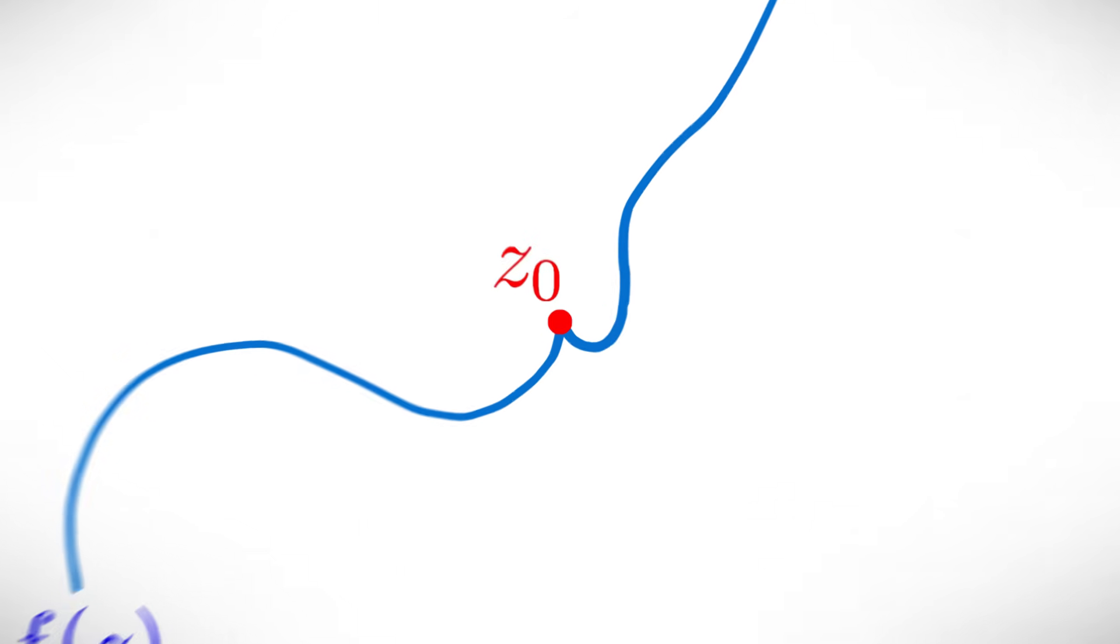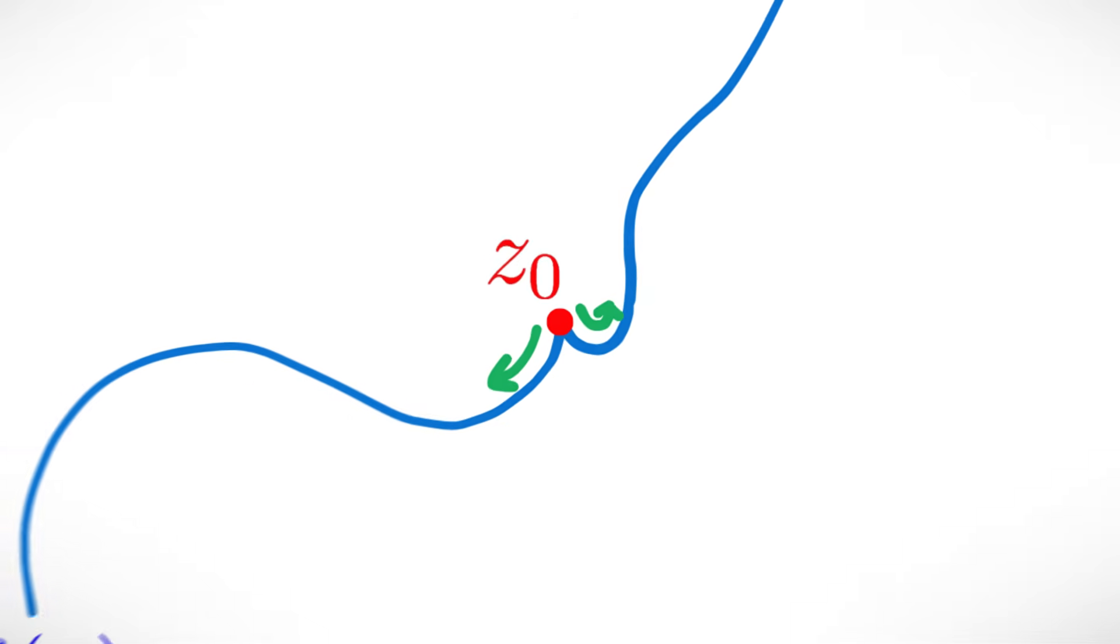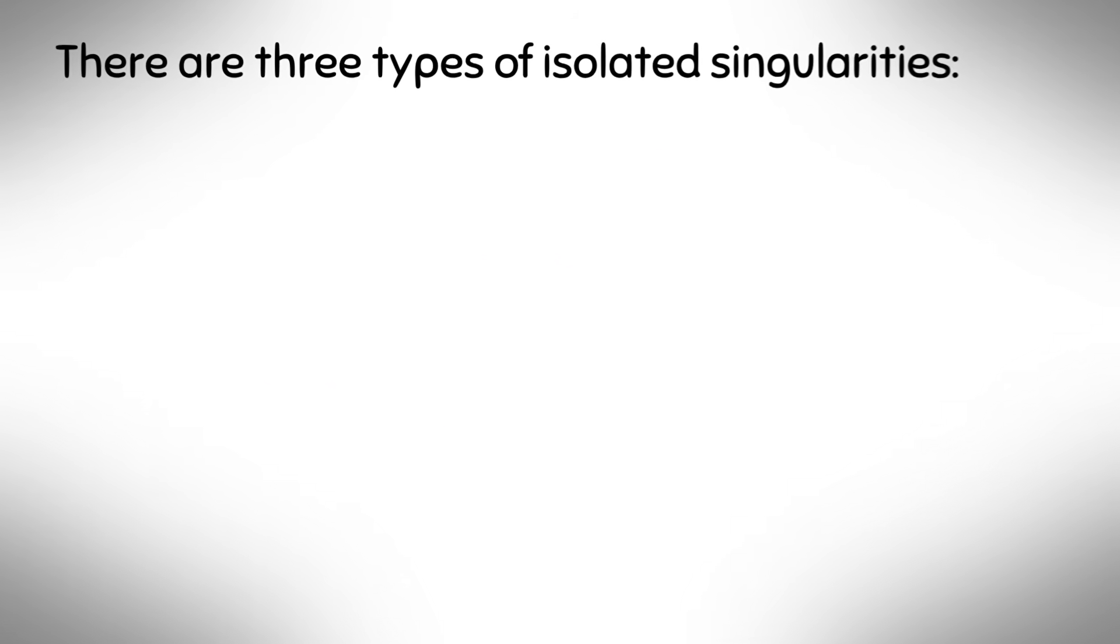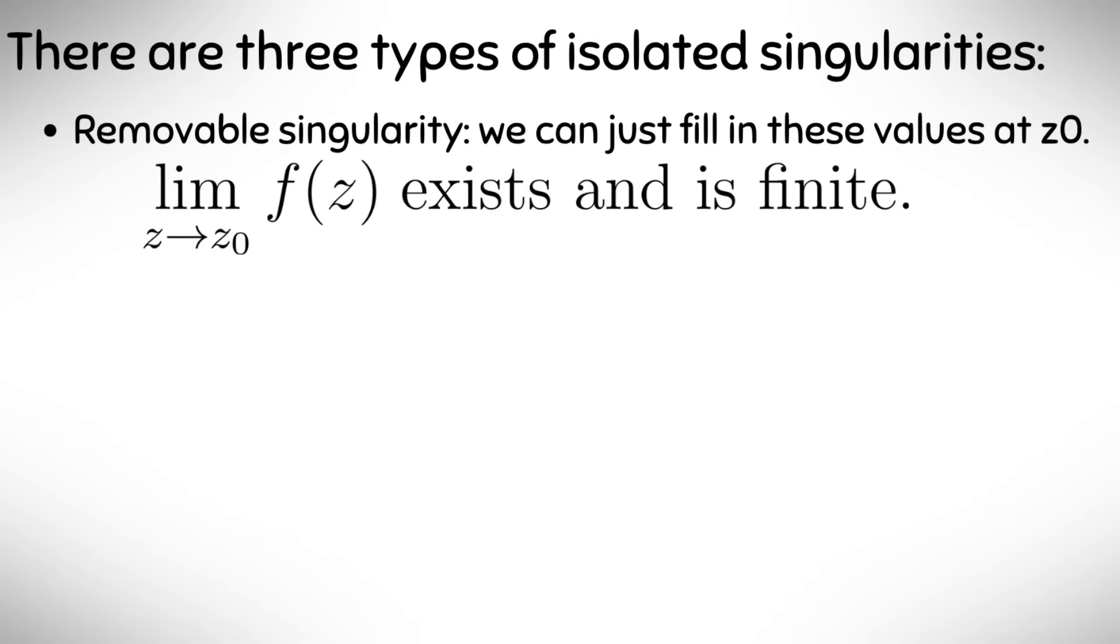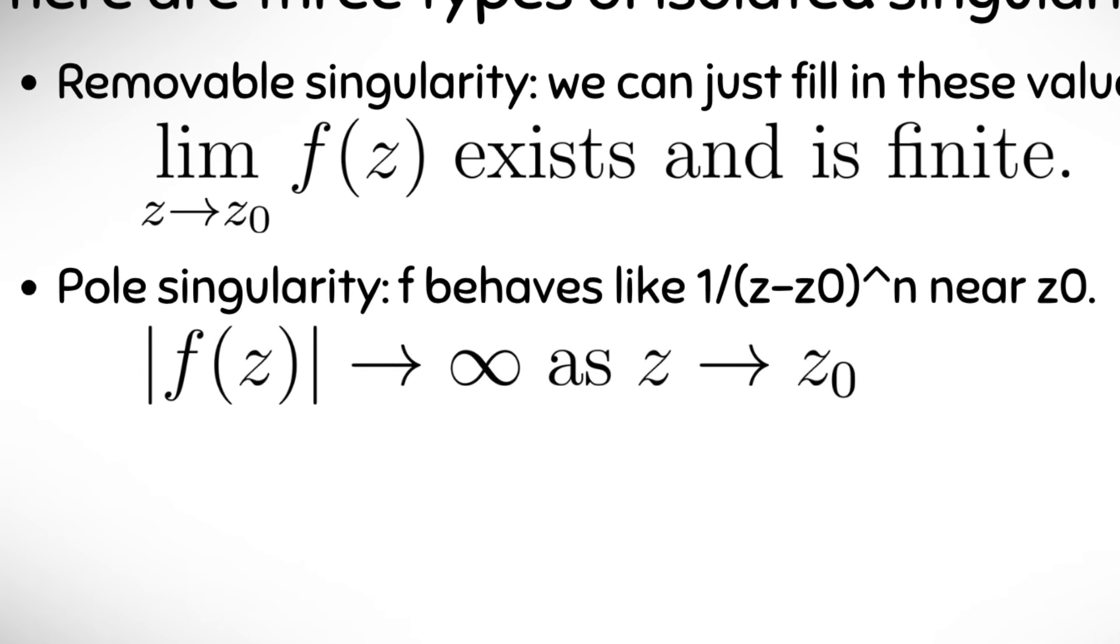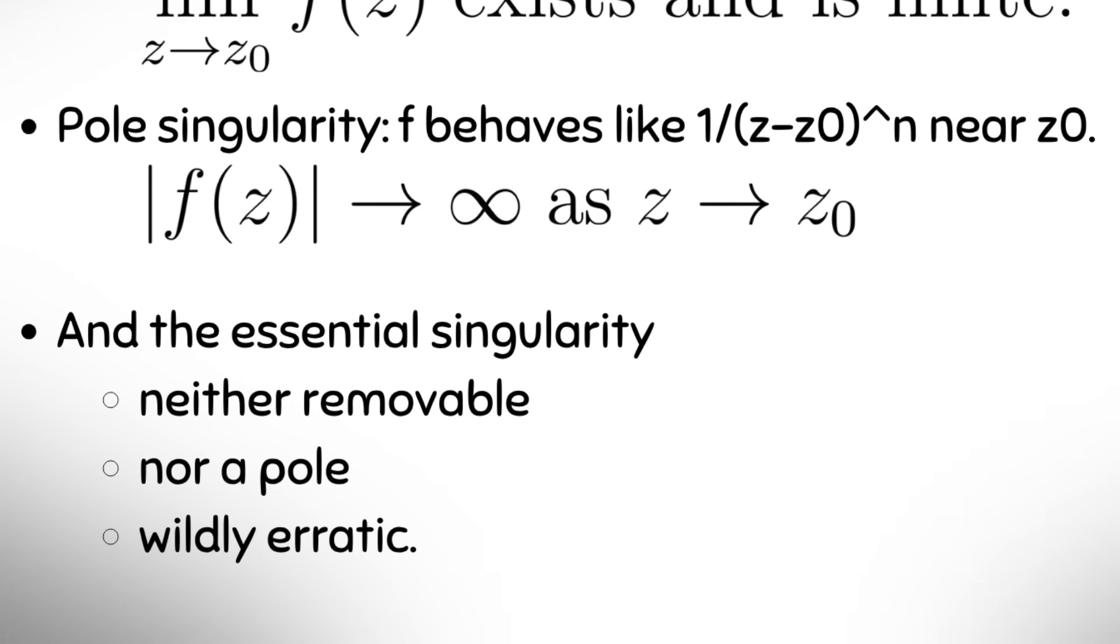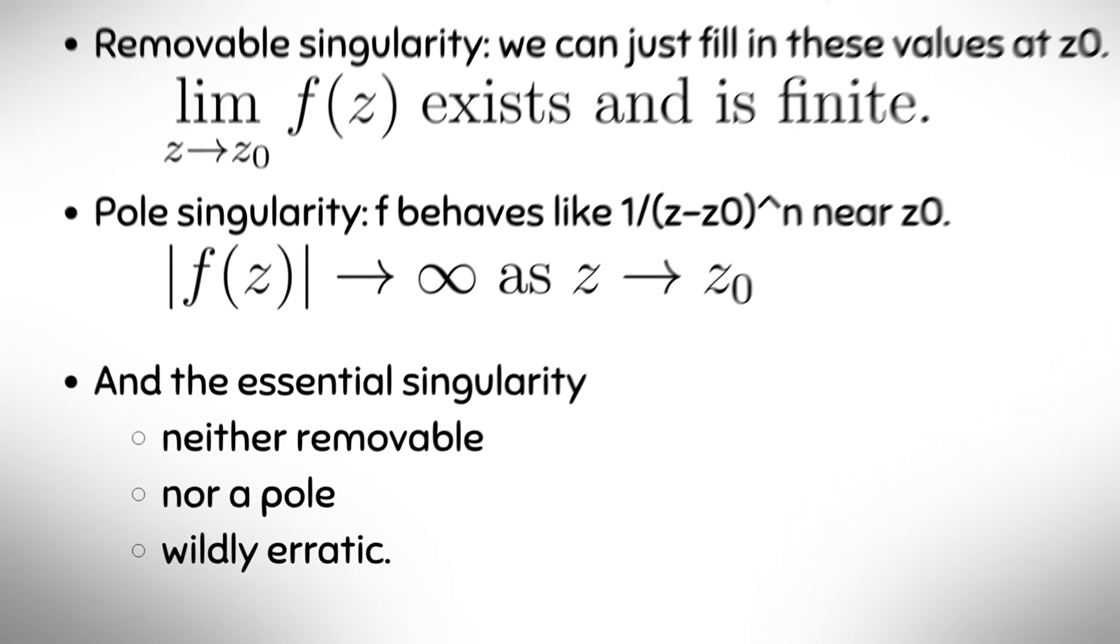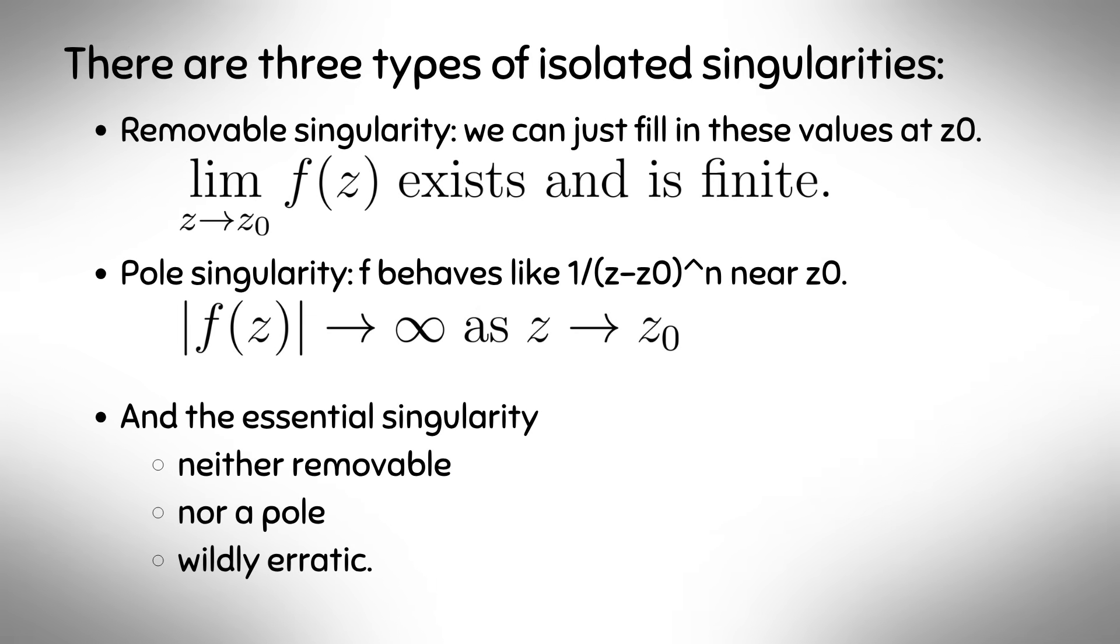Essential singularities. In complex analysis, a singularity is a point where a complex function, f of z, is not differentiable as a complex function, but is differentiable everywhere else in some neighborhood of that point. There are three types of isolated singularities. Removable singularity, which is where the limit as z tends to z0 of f of z exists and is finite, and we can fill in the point to make f analytic at z0. Pole, where mod of f of z tends to infinity as z tends to z0, so f behaves like 1 over z minus z0 to the n near z0. An essential singularity which is neither a removable nor a pole, so the behavior near z0 is wildly erratic.